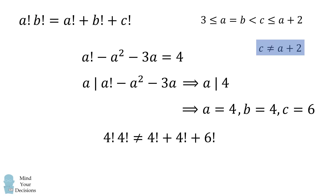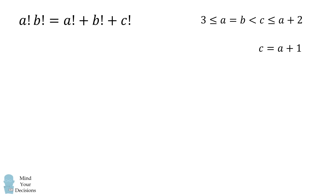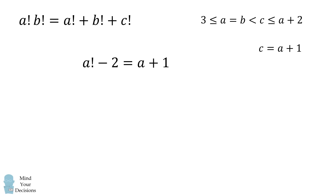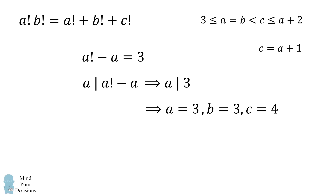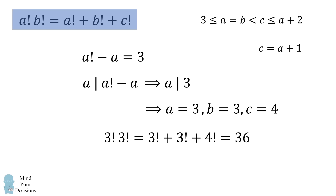So we consider the other case: c equals a plus 1. Substituting and simplifying, moving a terms to the left and constant terms to the right, we find that a must divide 3. Since a ≥ 3, this means a equals 3. So a equals 3, b equals 3, and c equals a plus 1 equals 4. Substituting into the original equation — ta-da — we found the unique solution: 3! × 3! = 3! + 3! + 4!.